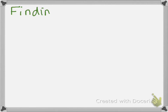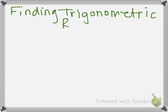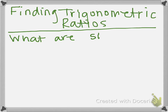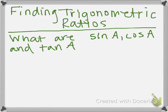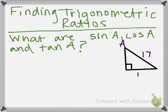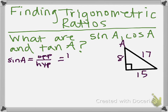Now we are going to look at finding some trigonometric ratios. What are sine of A, cosine of A, and tan of A? We are going to look at this triangle that we are given and find sine, cosine, and tangent. First, let's find sine. We are going to look for the opposite over the hypotenuse. Looking at angle A, the opposite side is going to be 15, and the hypotenuse is 17. So we are going to get 15 over 17.